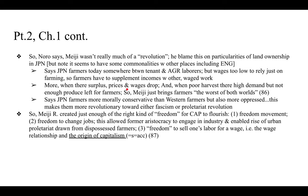Farm families could no longer support themselves with agriculture alone, so they relied on commodity production for the global market, determined by market imperatives — itself a form of wage labor. When there was an agricultural surplus, prices and wages dropped; when there was a poor harvest, there was high demand but not enough produce left for farmers. Meiji brought farmers, in Noro's words, the worst of both worlds. Noro also says Japanese farmers were more morally conservative than western farmers but more oppressed, making them potentially revolutionary toward either fascism or proletarian revolution.